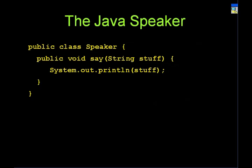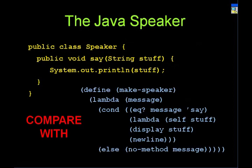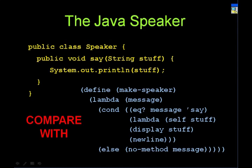This is how you define a speaker in Java — just five lines of code, and only three lines with real content. Compare this to the Scheme version: there's so much extra code that you don't have in Java. There's no lambda message thing, no EQ message thing. You just define the method called 'say'. There's no self, and none of this 'no method' nonsense. It's just much cleaner than doing this in Scheme.